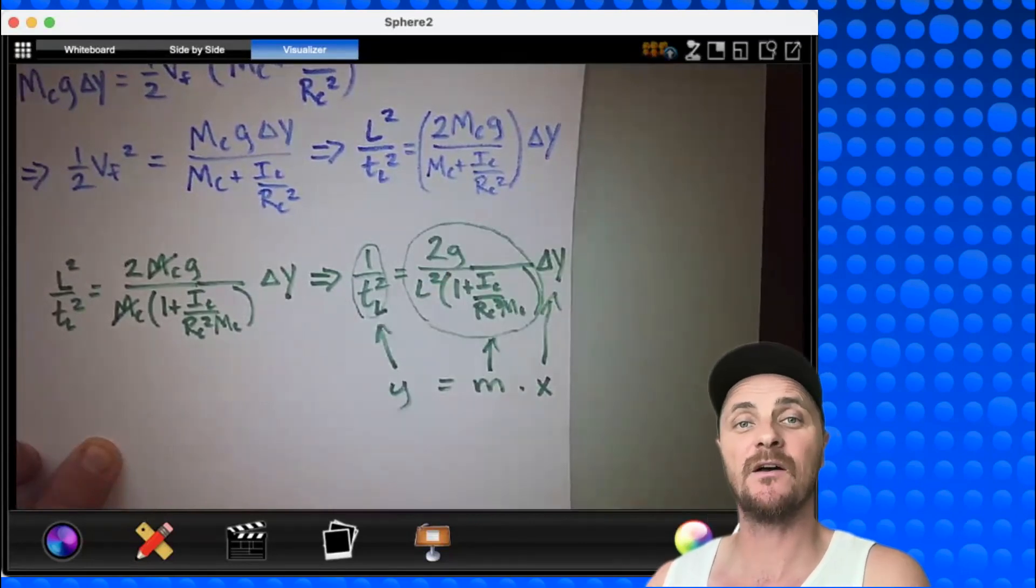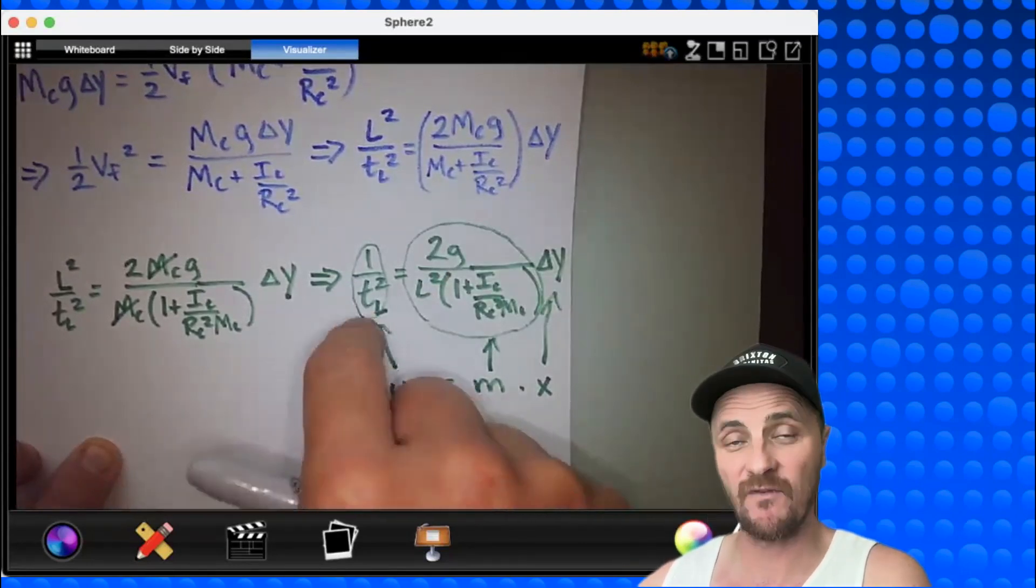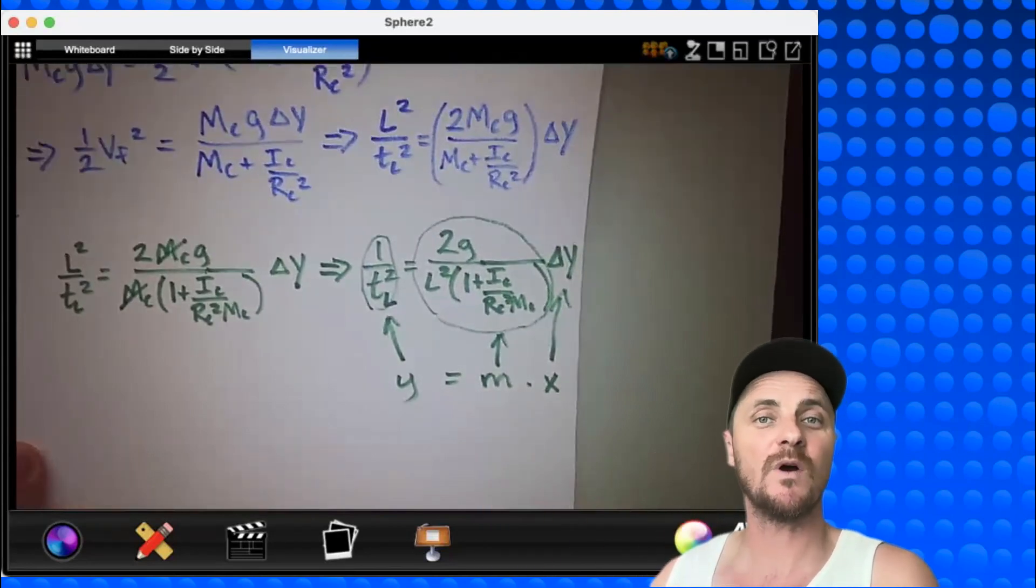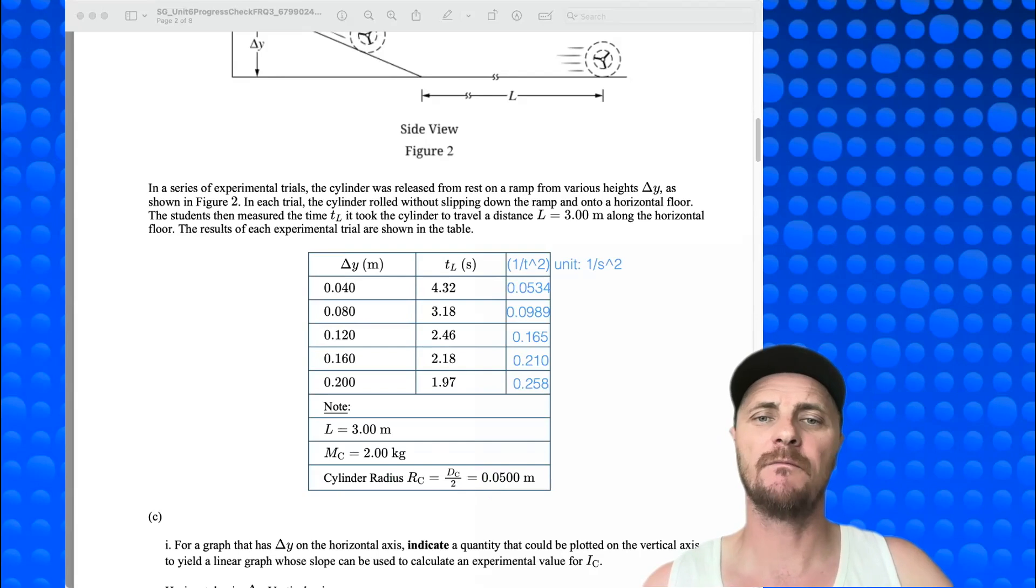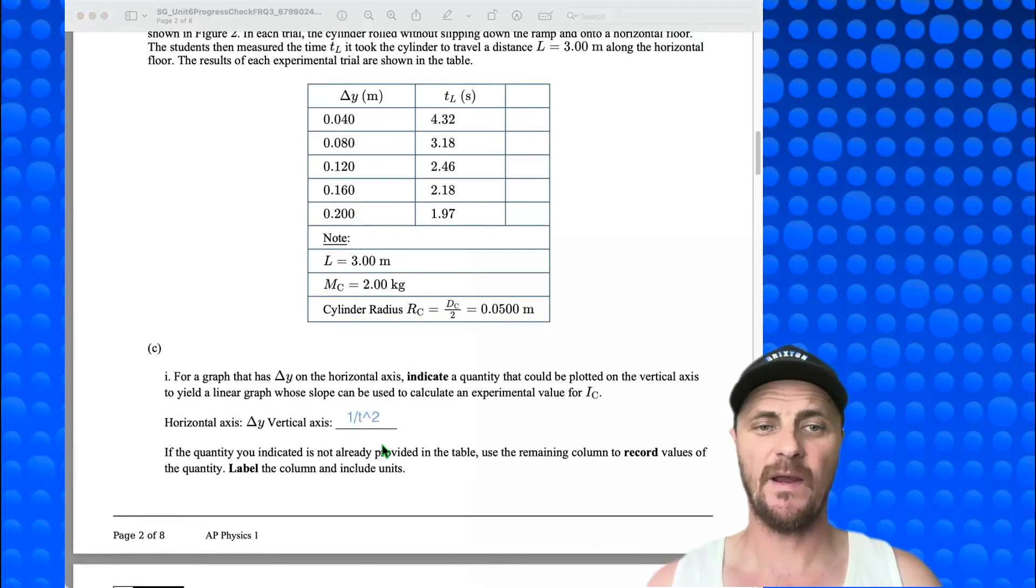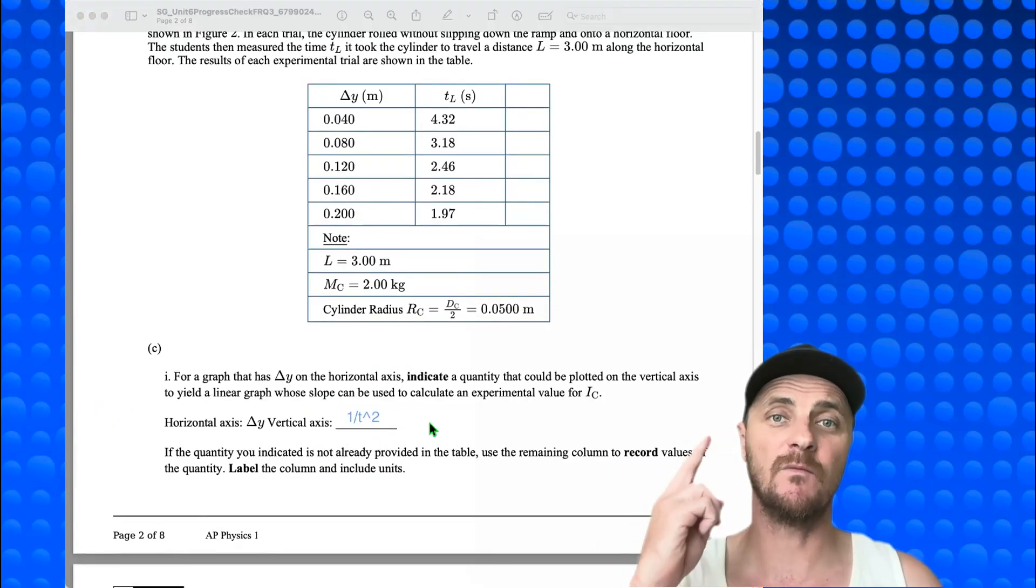Let's head back over to the question. Alright, and there is the last column filled in. Make sure you copy these numbers down. I did one divided by this squared over and over until I got all of these. The column header says one over t squared, and my unit is one over second squared. We're almost done with c1. All we have to say is that on the vertical axis we are plotting one over t squared. And there we have it right there. We're putting one over t squared on the vertical axis. We're moving on to c2.